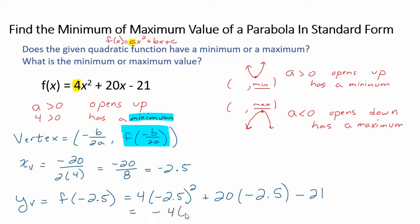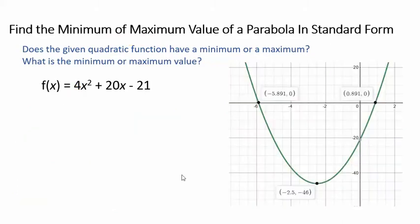So that tells me the vertex is at negative 2.5, negative 46 and this parabola opens up. Let's take a look at a picture. Here we go. Here's my vertex at negative 2.5, negative 46. The parabola opens up. So the minimum value